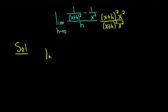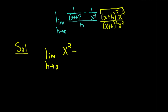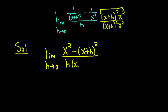This is the limit as h approaches 0, and now we're going to distribute this piece. We have (x+h)² times x². When you multiply by the first term, the (x+h)² cancels, so you're left with x squared. When you multiply by the second term, the x² cancels, so you're left with (x+h)². All of that is being divided by h, and we still have (x+h)² and x squared.